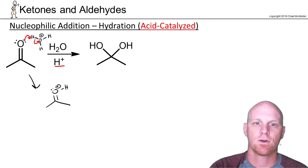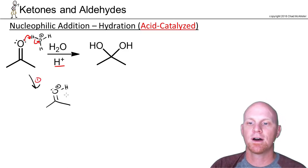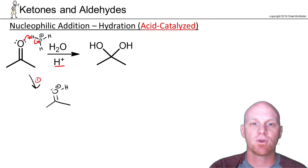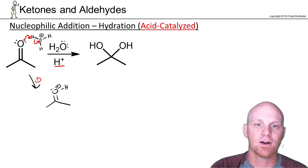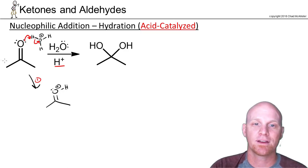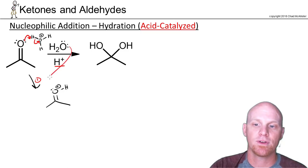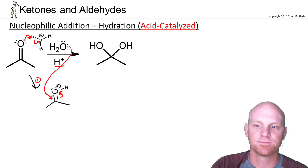Our protonated ketone is much more electrophilic — a much stronger electrophile than the original ketone. And water, which is a weak nucleophile, won't react generally with a ketone proper, but it will react with a protonated ketone. So water is going to come and do nucleophilic attack here, kicking the pi electrons up to the oxygen.